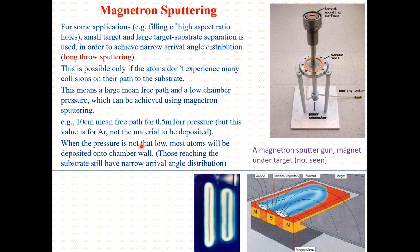When the pressure is not that low — that is, not at 0.5 millitorr — most atoms will be deposited on the chamber wall. However, those reaching the substrate still have narrow arrival angle distributions. When we have sufficiently low pressure, the mean free path is higher and atoms can travel to the substrate for deposition.